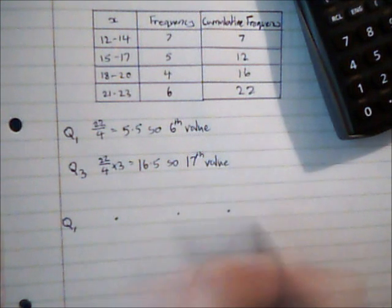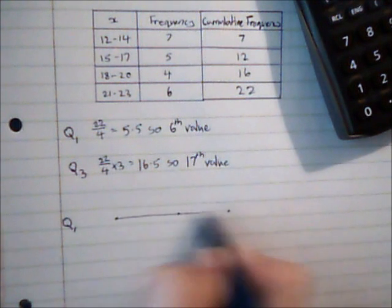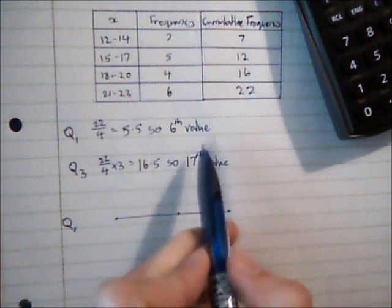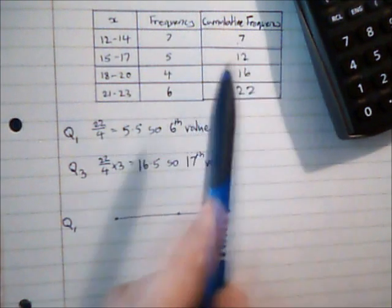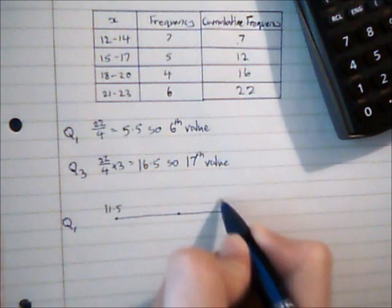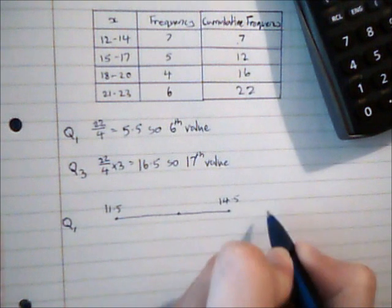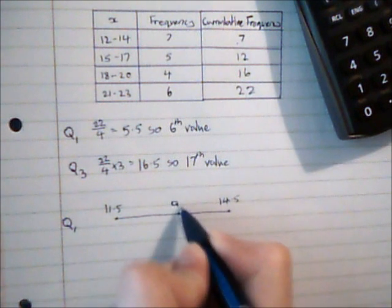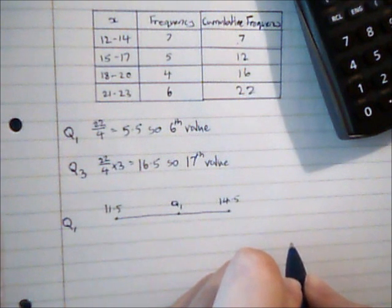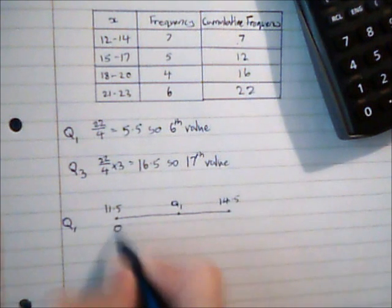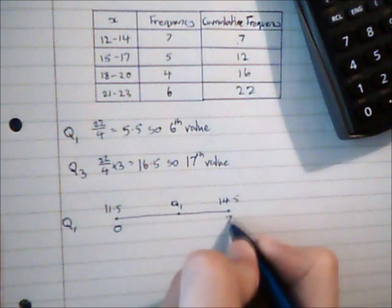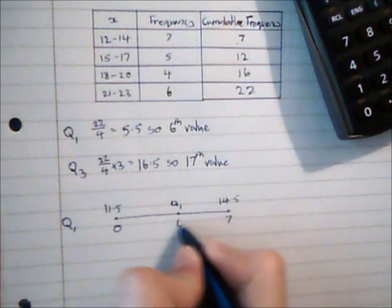So above these three points I'm going to indicate the group. So Q1 is the 6th value, so that's going to be here in the first group somewhere. So that group actually goes from 11.5 to 14.5, and Q1 is some way through that group. And if I think of the same list of frequencies, the beginning of that group has a frequency of 0. By the end of the group we're up to 7 bits of data, and we want to know where the 6th bit of data is.